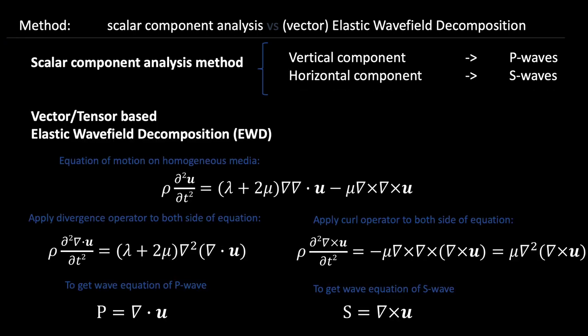As the separation methods grow, more vector or tensor based methods come up. They can fully utilize all components of the signals. This kind of method is mainly based on the mathematical and physical theory that P waves can be derived by calculating the divergence of the elastic waves, and S waves can be derived by calculating the curl of the elastic waves. However, this method cannot be used on recorded data directly. But why?